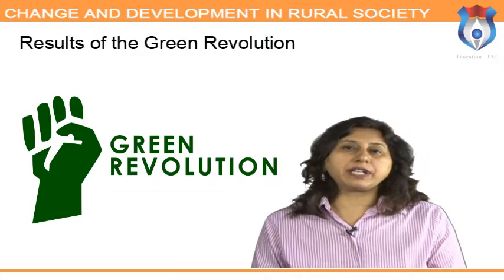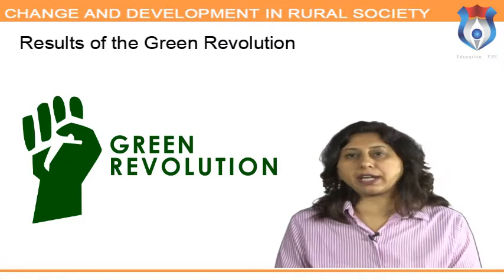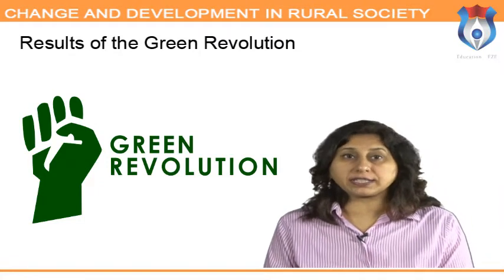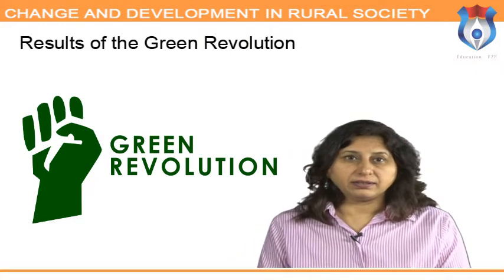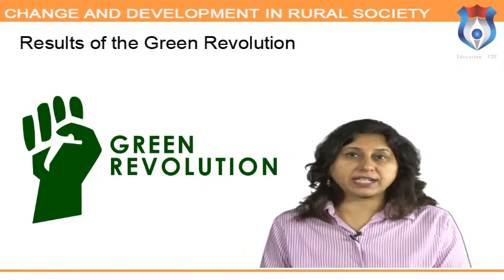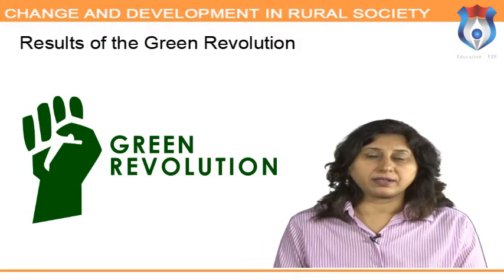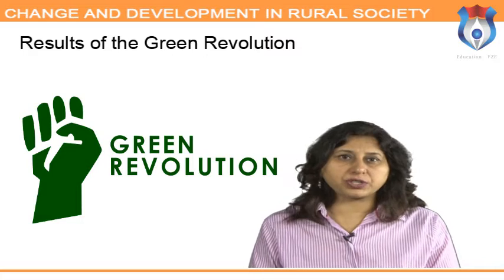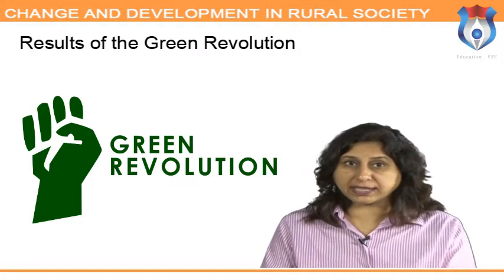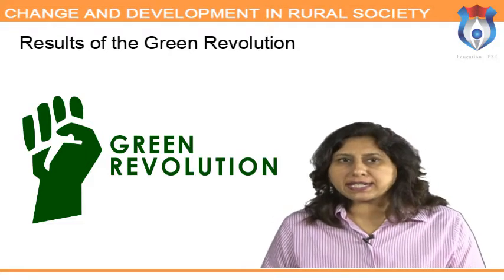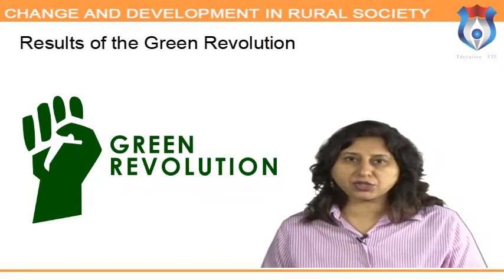Results of the green revolution: the green revolution resulted in a record grain output of 131 million tons in 1978-79 and established India as one of the biggest agricultural producers in the world. The green revolution created jobs not only for agricultural workers but also for industrial workers by creating lateral facilities such as factories and hydroelectric power stations.